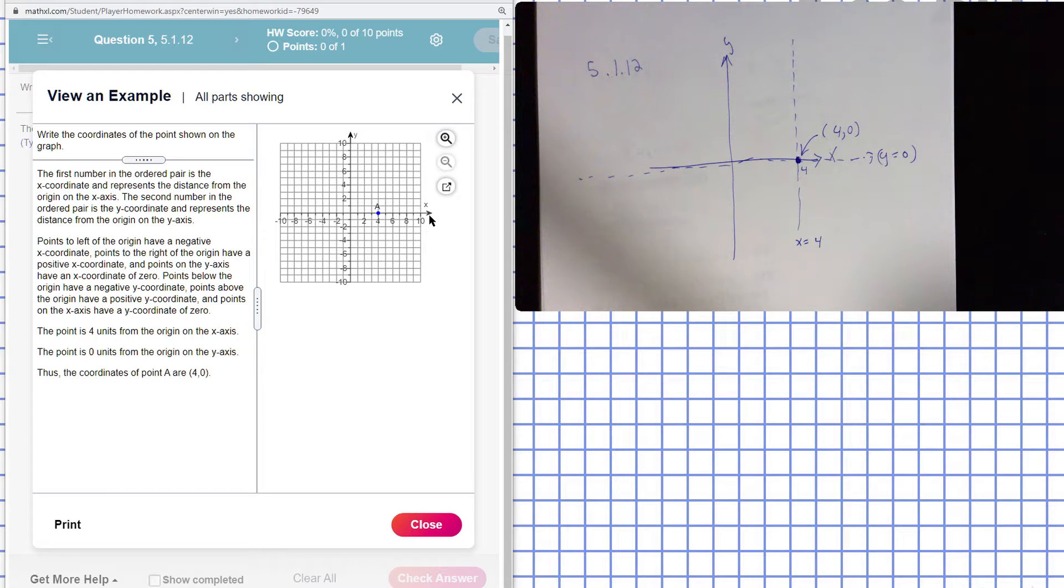The y-axis has the properties of a number line, positive on one side and negative on the other. And where they cross is called the origin. To give us a point here, they want to know the location of that point on the grid.